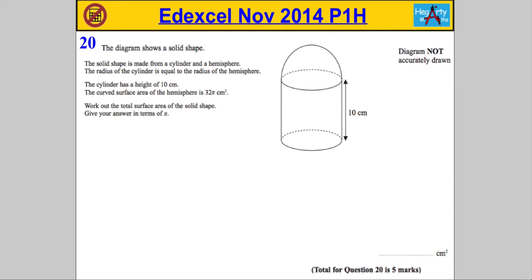Question 20. The diagram shows a solid shape. The solid shape is made from a cylinder and a hemisphere. The radius of the cylinder is equal to the radius of the hemisphere.